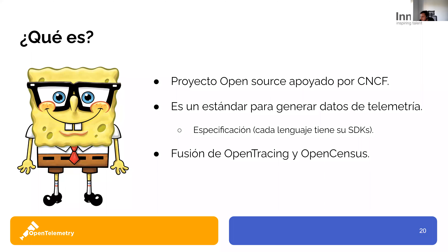¿De dónde surge OpenTelemetry? Surge para crear un estándar para la telemetría, porque siempre se ha desarrollado para proveedores concretos, sobre todo con los APMs, y es un costo añadido. Pero ya existían algunos estándares: OpenTracing y OpenCensus. OpenTracing era un estándar de generación de trazas, y OpenCensus es el estándar de generación de métricas. OpenTelemetry lo que ha hecho es coger estos dos y además ha añadido el otro pilar, que son los logs. Empezó por las trazas y métricas, que son los que más rápido salieron en release, y le está tardando más sacar los logs porque es algo que no estaba hecho.